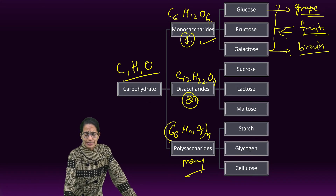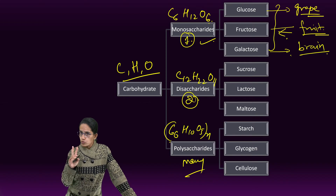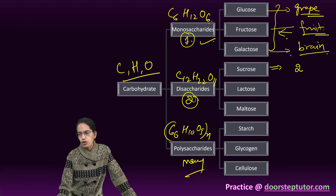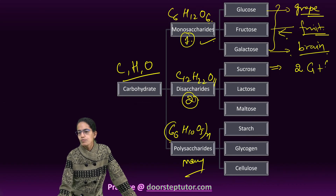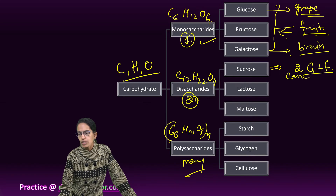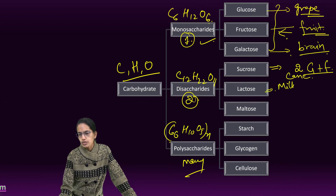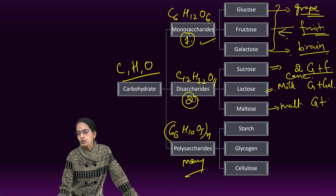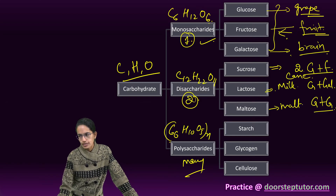Disaccharides have two molecules. Sucrose is a disaccharide composed of glucose plus fructose, and is also known as cane sugar. Lactose, also known as milk sugar, has glucose plus galactose. Maltose, also called malt sugar, has two molecules of glucose combined together.